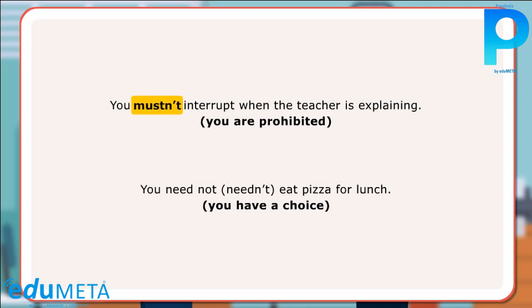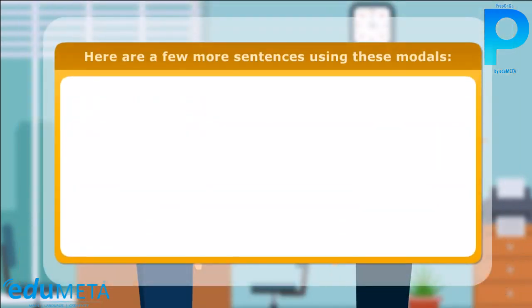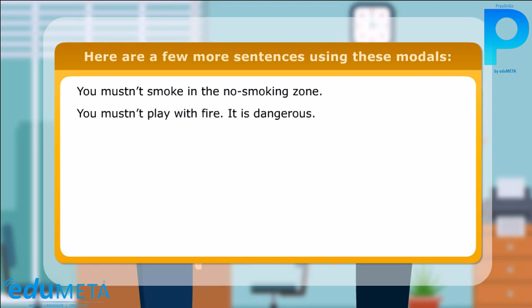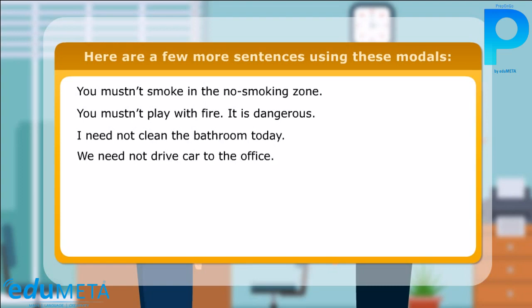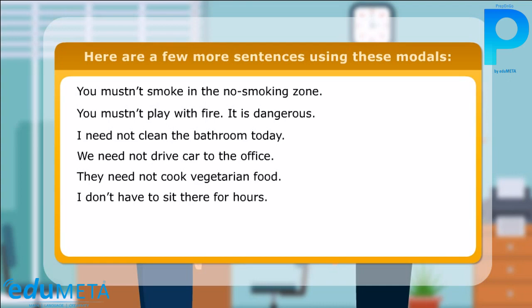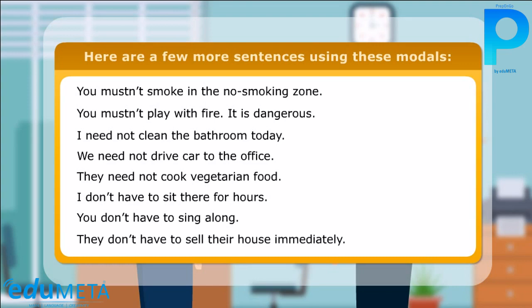Sentences: You must not interrupt when the teacher is explaining — you are prohibited. You need not eat pizza for lunch — you have a choice. You must not smoke in the no-smoking zone. You must not play with fire — it is dangerous. I need not clean the bathroom today. We need not drive a car to the office. They need not cook vegetarian food. I don't have to sit there for hours. You don't have to sing along. They don't have to sell their house immediately.